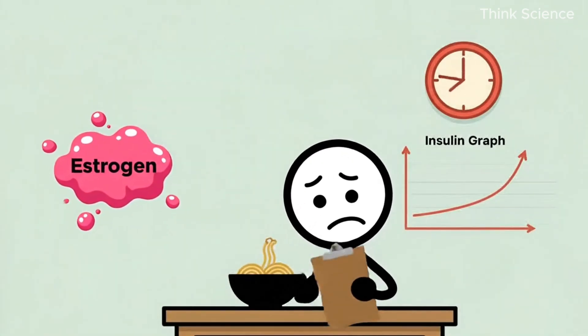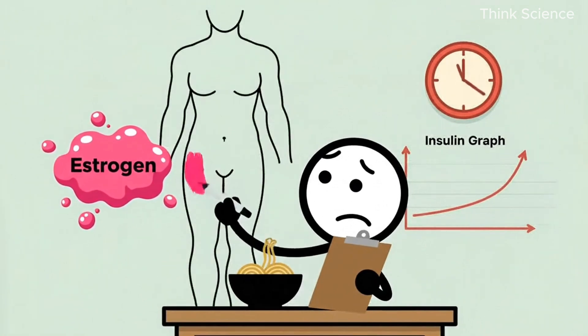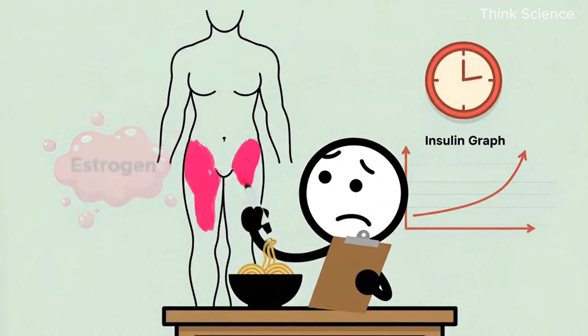Now add estrogen to the mix. Too much estrogen causes fat storage, especially in the lower body—hips, thighs, butt.